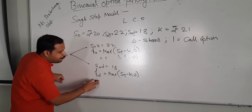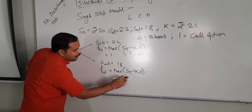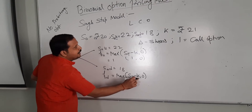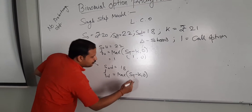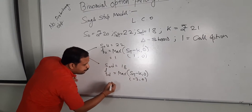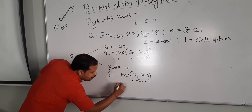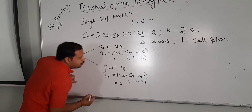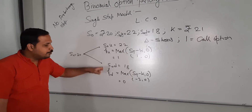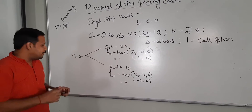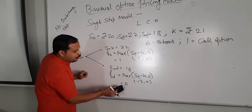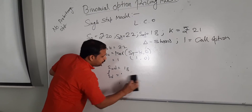Similarly, in case of FD, the value would be ST of 18 minus 21, so what we are getting is minus 3 or 0. Out of minus 3 and 0, the maximum value is 0. So we have calculated the value of FU and FD: the value of FU is equal to 1 and the value of FD is equal to 0.